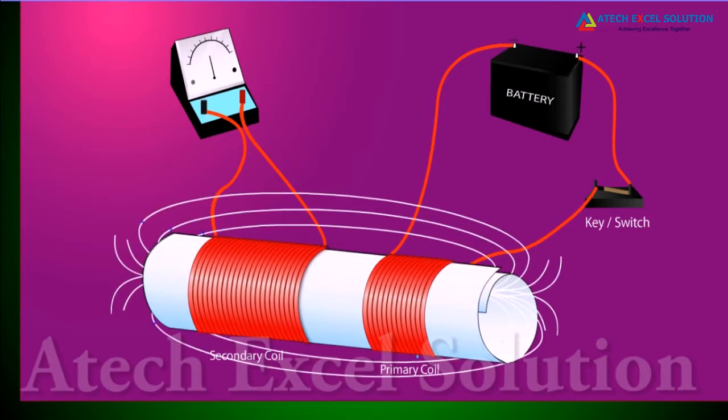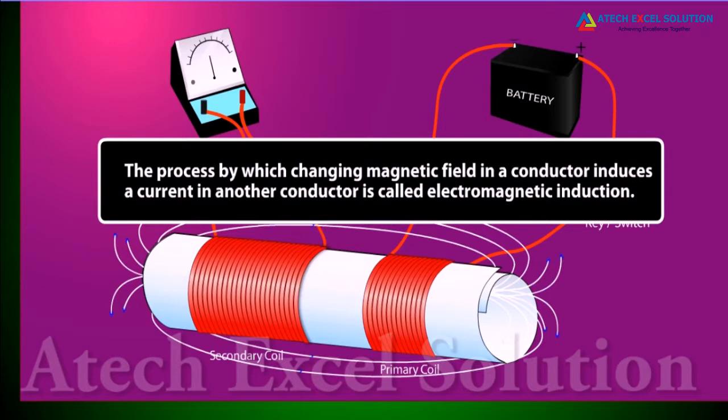The process by which changing magnetic field in a conductor induces a current in another conductor is called electromagnetic induction.